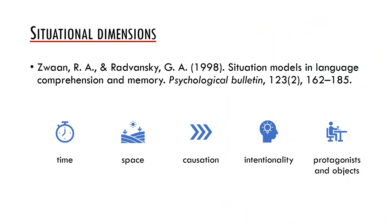A seminal study in the research on situation models in the domain of psycholinguistics was a paper by Rolf Zwaan and Gabriel Radvansky, Situation Models in Language Comprehension and Memory. The authors distinguish five situational dimensions: time, space, causation, intentionality, and protagonists and objects. They claim that as each incoming clause is processed, the event representation is formed and it is integrated with the event representations currently in working memory based on its overlap with those representations on each of the five dimensions.